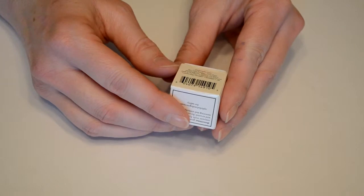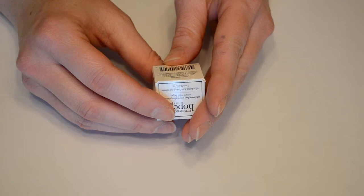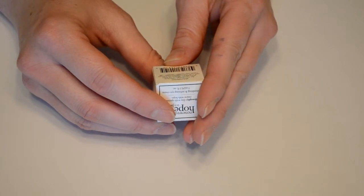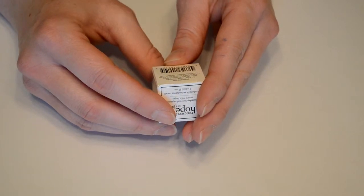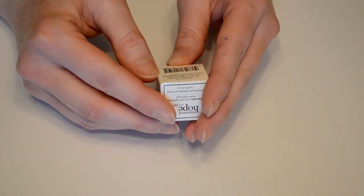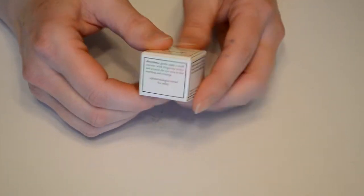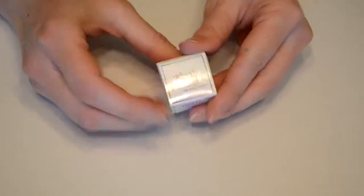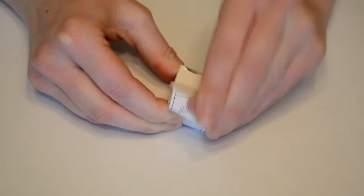On the bottom it has Philosophy.com, who distributes it, where it's made—it's made in the USA—the telephone number, and the barcode so they can scan it when you purchase it. So we're just going to see what it looks like.